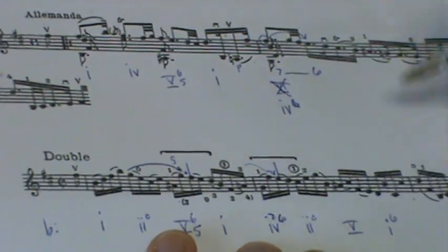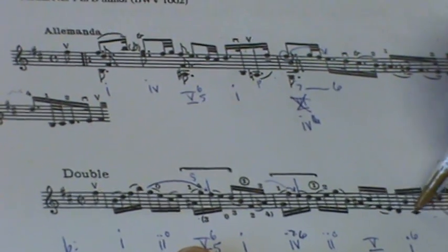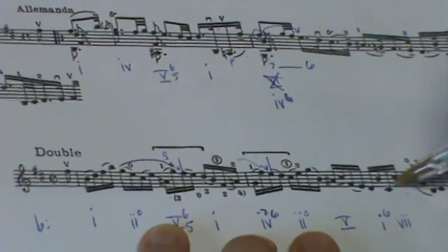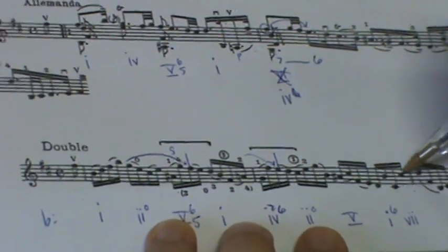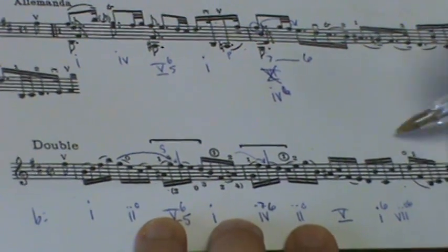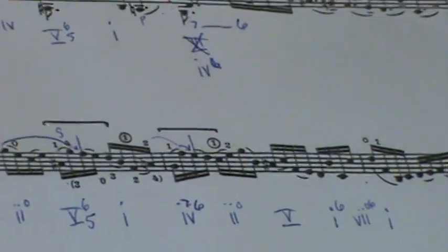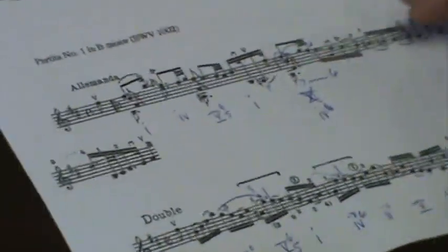This looks like a resolution here to a 1. We'll say it's inverted. And then this looks like we might want to imply some kind of a dominant functioning chord. Maybe a 7 diminished 6. It's hard to keep going like this, making decisions, if I don't have a bass line chosen. So let's just go to that.